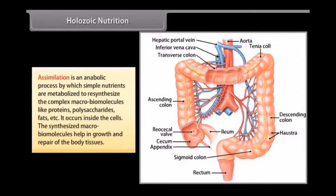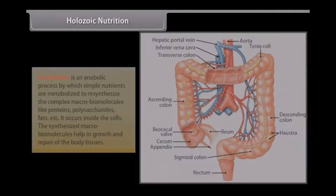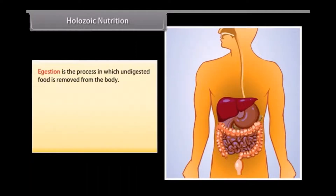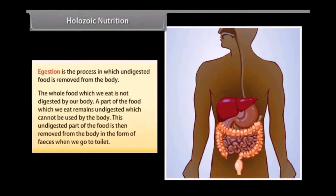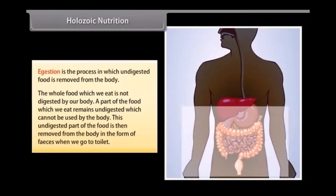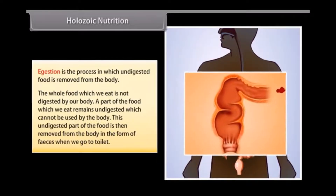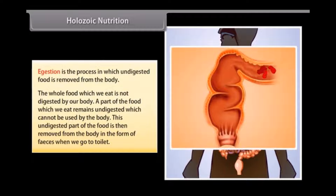Assimilation is an anabolic process by which simple nutrients are metabolized to re-synthesize complex macro-biomolecules like proteins, polysaccharides, fats, etc. It occurs inside the cells, and the synthesized macro-biomolecules help in growth and repair of body tissues. Egestion is the process in which undigested food is removed from the body in the form of feces.